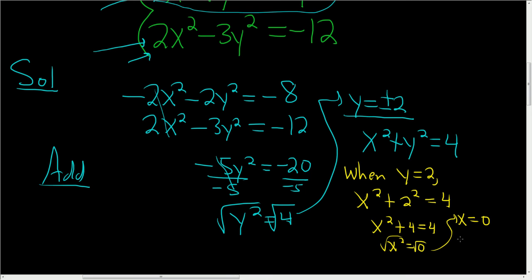So when y is equal to 2, we have one solution. That solution is 0, that's the x, comma 2, that's the y. So that is one of our answers.